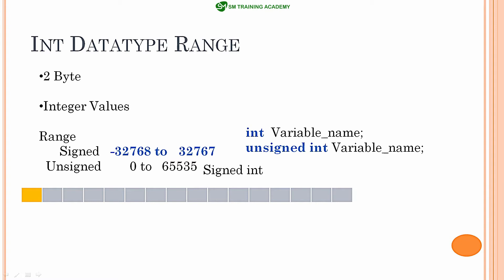Similar to the char datatype that we discussed, the 15th bit number is useful for telling us whether the number is positive or negative. If you have a value 0 in bit number 15, the number stored is positive, and 1 in the same signed bit position represents that the number stored is a negative number.